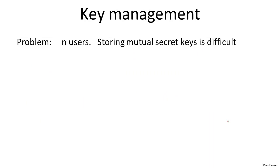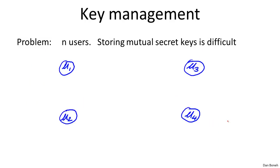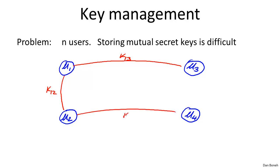Imagine there are N users in the world, and the question is how do these users manage the secret keys they're going to use to communicate with one another? If N equals four, one option is that every pair of users will share a shared secret key. For example, U1 and U3 will share a shared secret key K13, U1 and U2 will share K12, and so on and so forth.